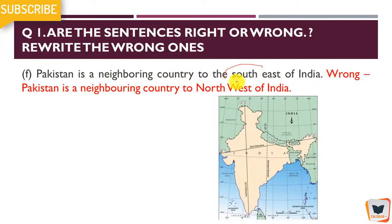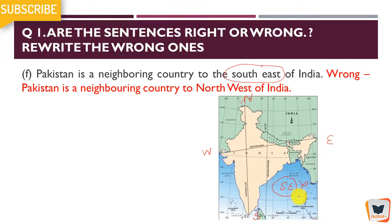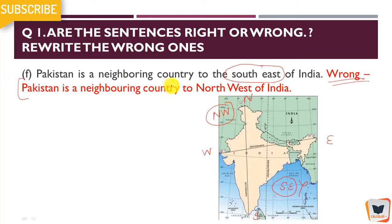Pakistan is a neighboring country to the south east of India. Looking at the directions — north, south, west, east — south-east would be here, but Pakistan is not there. Pakistan is to the north-west of India. So this statement is wrong and you have to correct it: Pakistan is a neighboring country to the north west of India.